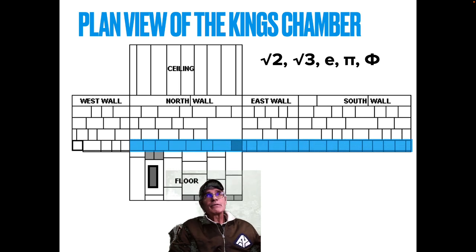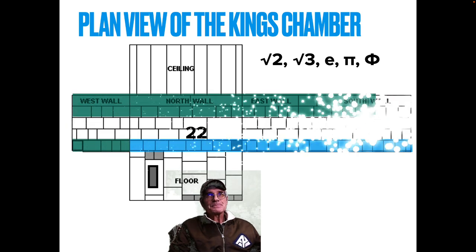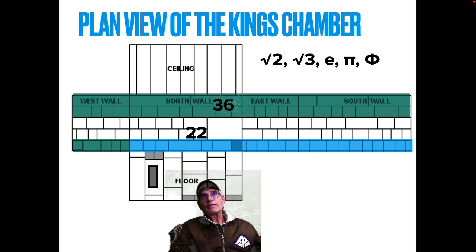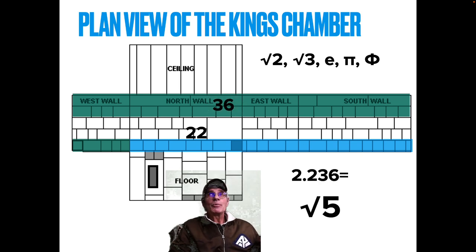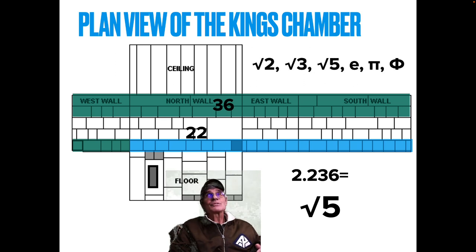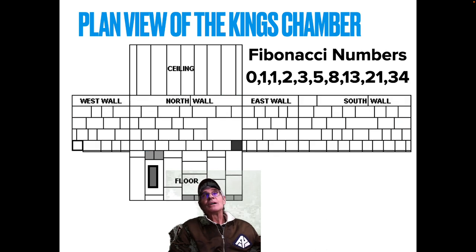Take most of the fifth course except for the west wall — you've got 22 blocks. Then take the top two courses completely and the rest of the west wall fifth course — that's 36. So 2.236 — square root of 5. There you've got square root of 2, square root of 3, square root of 5, Euler, pi, and phi. Incredible revelations.